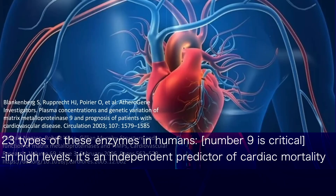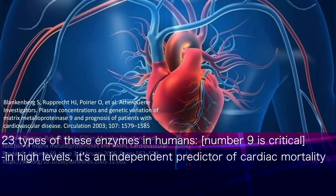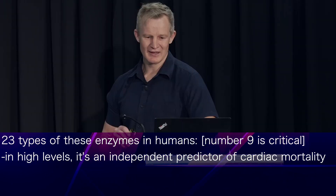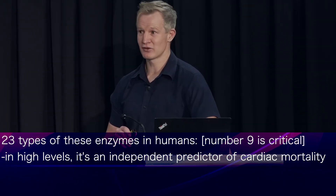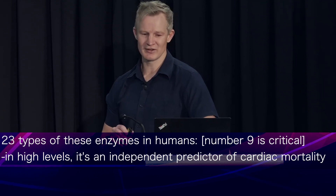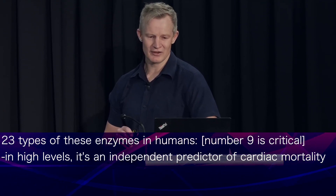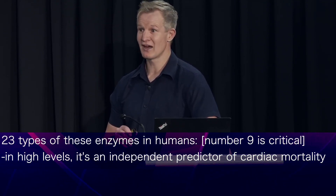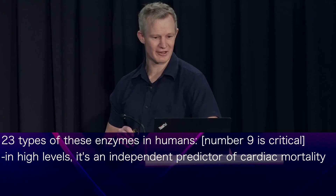There are 23 different types of matrix metalloproteinases in humans, and one which has been consistently shown to play an important role in plaque rupture is number 9. In fact, high levels of matrix metalloproteinase 9 have been shown to be an independent predictor of cardiac mortality.